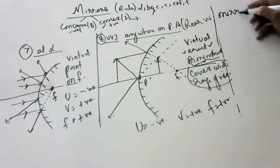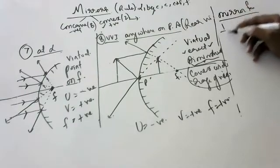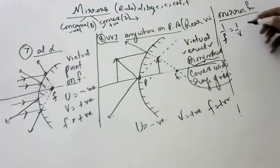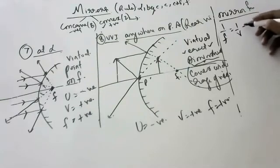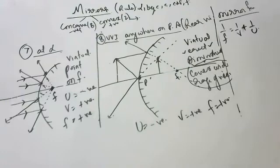Mirror formula: 1/f = 1/v + 1/u. The derivation is not required for your syllabus.